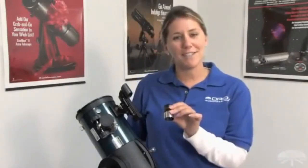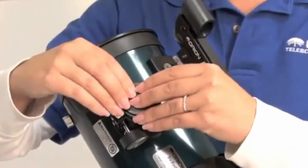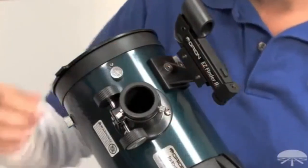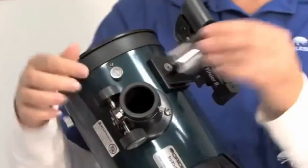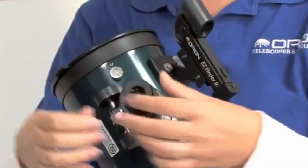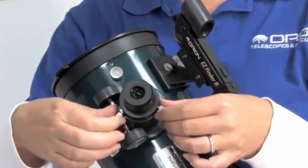Let's complete the assembly of the Orion Starblast 4.5 by inserting an eyepiece into the focuser. Remove the dust cap from the focuser. Loosen the thumb screws. Take your eyepiece chrome side down and slide it into the focuser and tighten the screws.